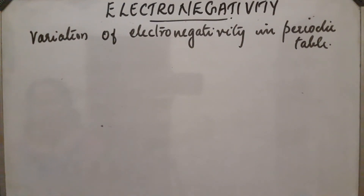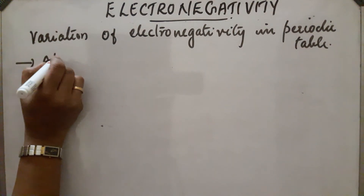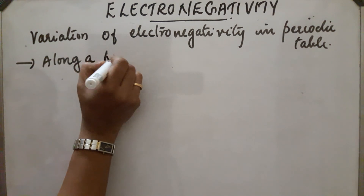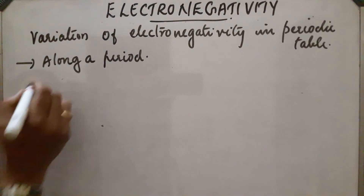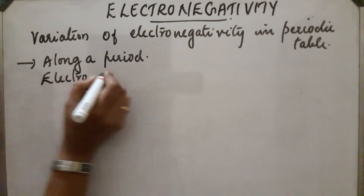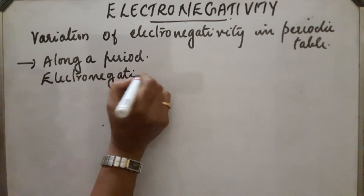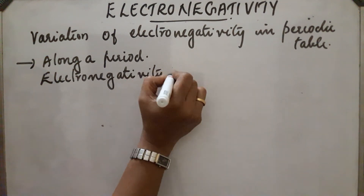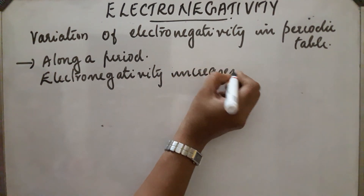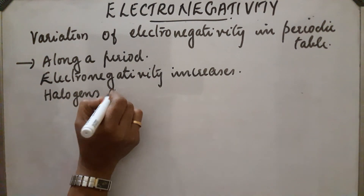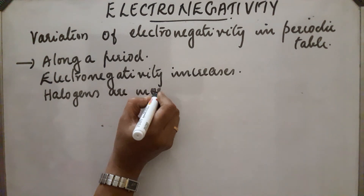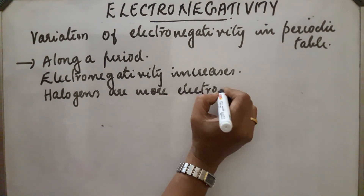Variation of electronegativity in the periodic table: along a period, from left to right, nuclear charge increases so electronegativity increases along a period. Halogens are more electronegative.